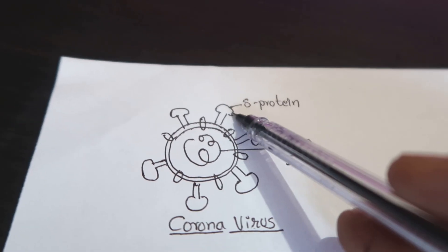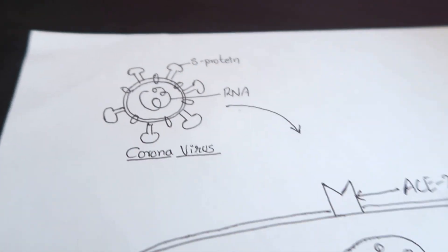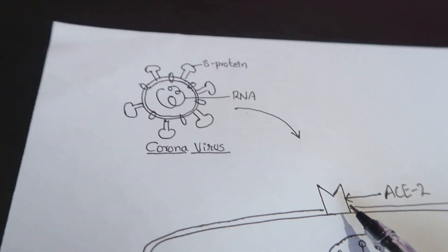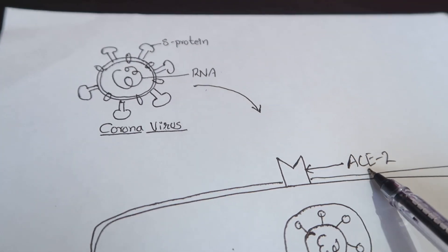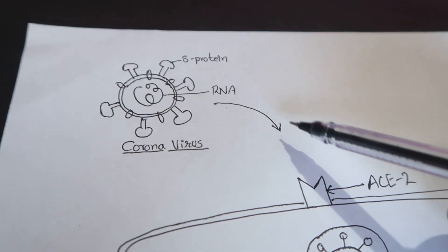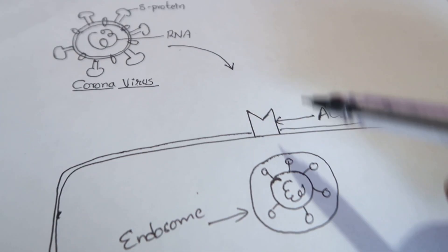The coronavirus has S proteins on its surface and viral RNA. The coronavirus binds with this receptor on the cell surface, which is angiotensin converting enzyme 2 receptor, and after binding with this receptor it will undergo receptor mediated endocytosis and form this endosome.